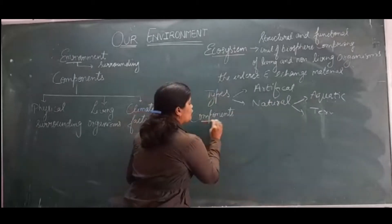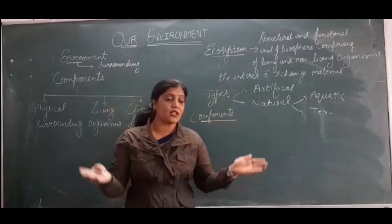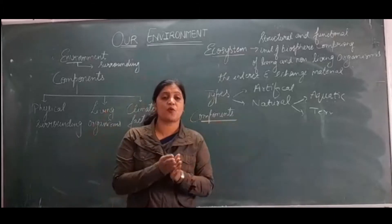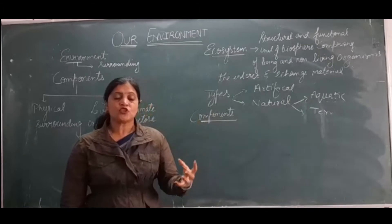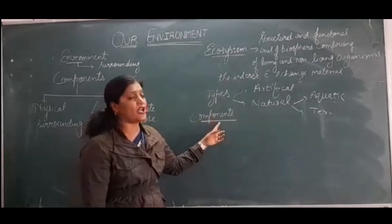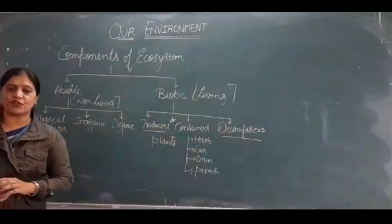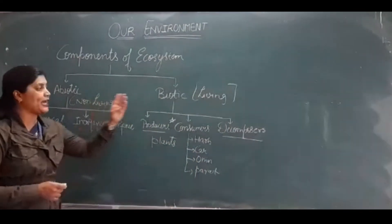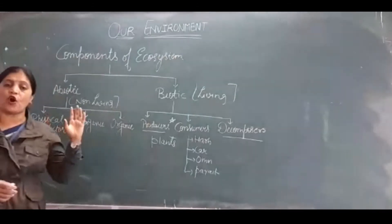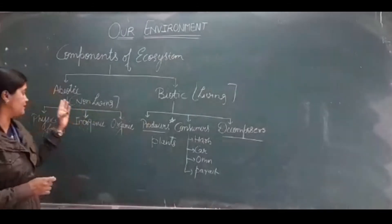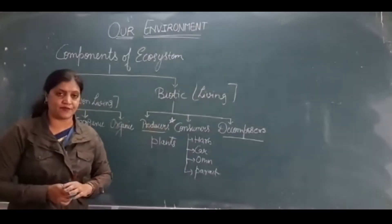Now we will discuss about the components of ecosystem. What are the things required to make a complete ecosystem? There are two main components of ecosystem: abiotic and biotic components. Abiotic includes all the non-living components, and biotic includes all the living components.